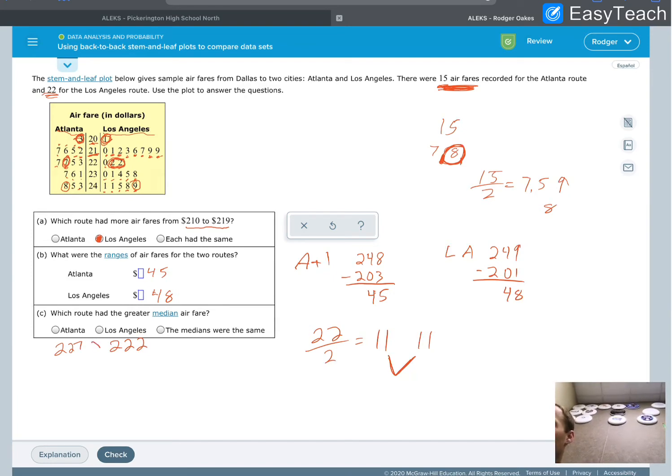227 is greater than 222, so Atlanta has the greater median airfare. That's it.